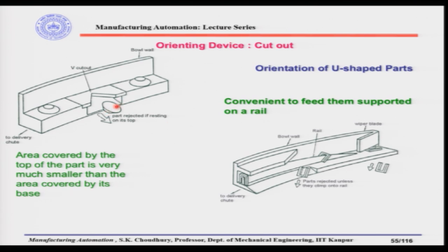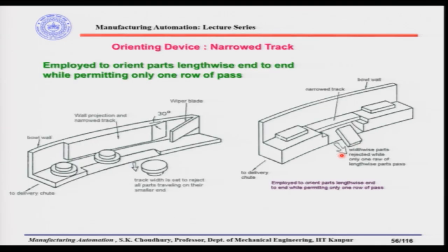For parts with different diameters at top and bottom, the V-cutout is convenient — parts pass with the smaller diameter up. For U-shaped parts, if they can ride on a rail, that is very convenient, and a rail can be designed for them. This is another arrangement of the orienting devices.